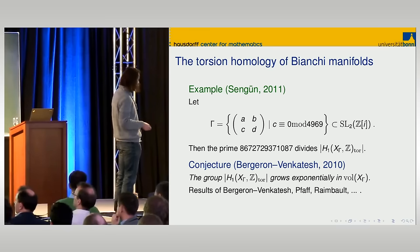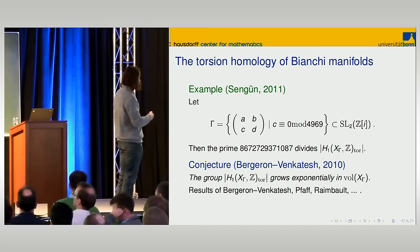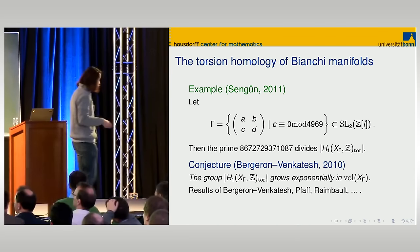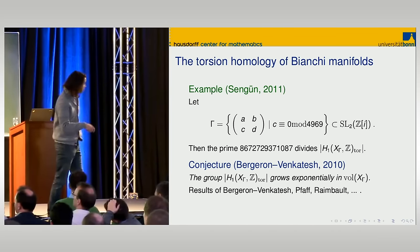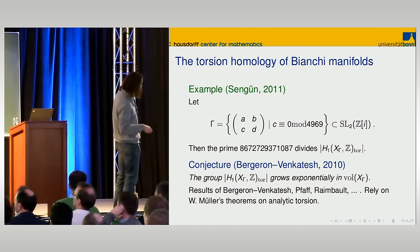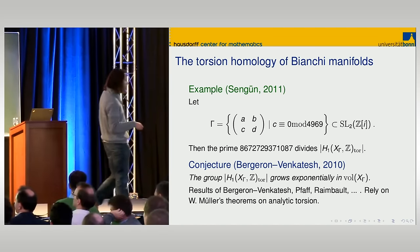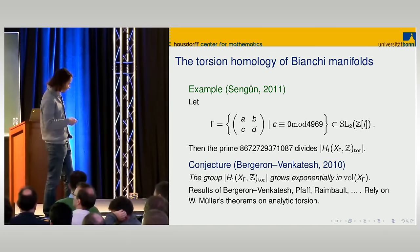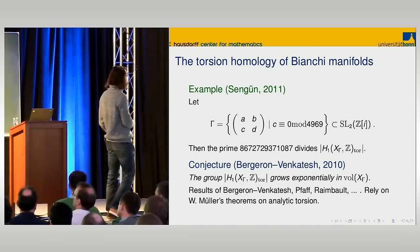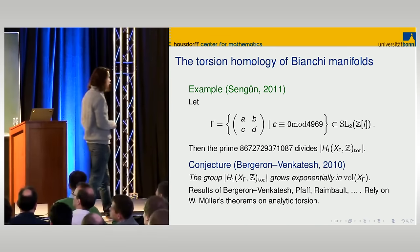There is a lot of evidence for this conjecture, both numerically and through theorems in slightly different situations by Bergeron-Venkatesh, Jonathan Pfaff, Jean Raimbault, and others. They all rely on Werner Müller's theorems on analytic torsion — there is an analytic way of computing the size of this torsion subgroup.